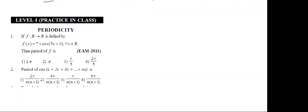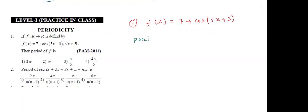Students, see here. The first problem: F(x) is equal to 7 plus cos of 5x plus 3. What is the period of this function? We already know the shortcut formula — the period of cos(Ax + B) is 2π by mod A.